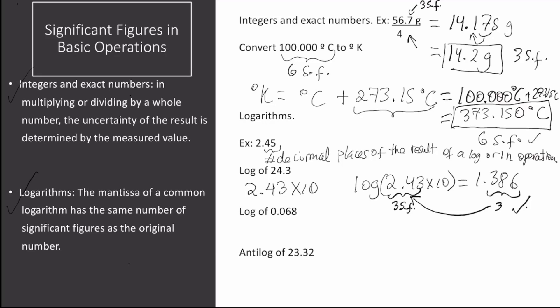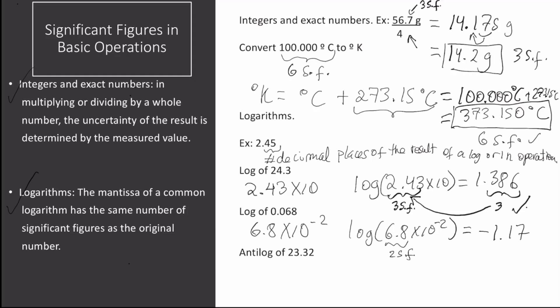The next example is the log of 0.068. This can be rewritten as 6.8 times 10 to the negative 2. We notice that this has two significant figures, so the final answer must have two decimal places. Using the calculator, we get negative 1.17, which has two decimal places as desired.